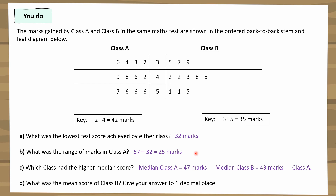Part d — the mean score of Class B. Don't forget to include the stems when reading values: 35 + 37 + 39 + 42 + 42 + 43 + 48 + 48 + 48 + 51 + 51 + 55, then divide by 11 students. The mean is 44.6 to one decimal place, which makes sense as most Class B scores were in the 40s.